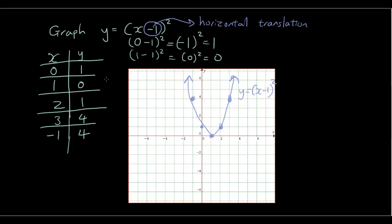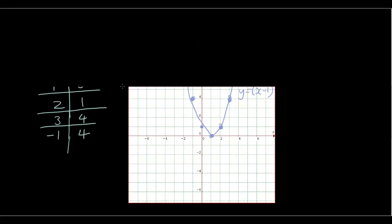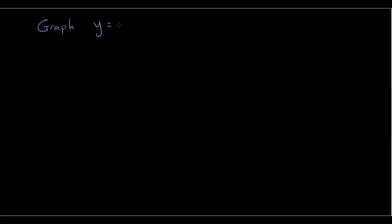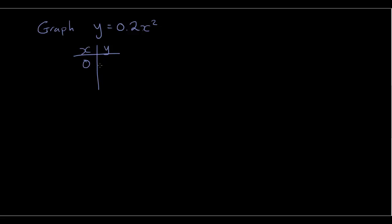All you have to remember is: when it's a negative translation, we shift it to the right; when it's a positive, we shift it to the left. Now let's do an example where we change the slope of the parabola. We should graph y equals 0.2x squared — that should make it a bit more obvious. Let's draw our table of values. When x is 0, y is 0. When x is 1, 1 squared is 1, times 0.2, y equals 0.2.